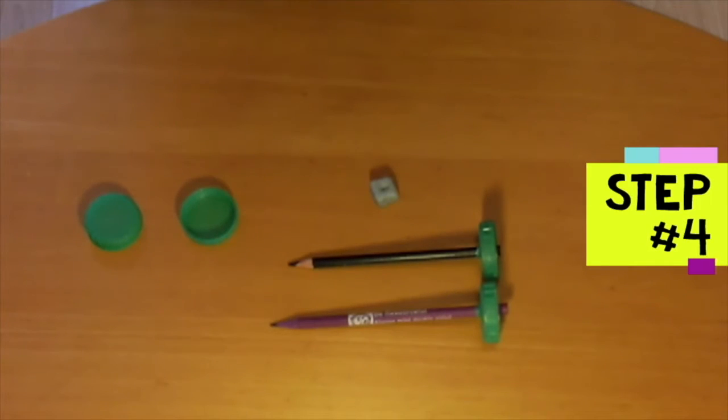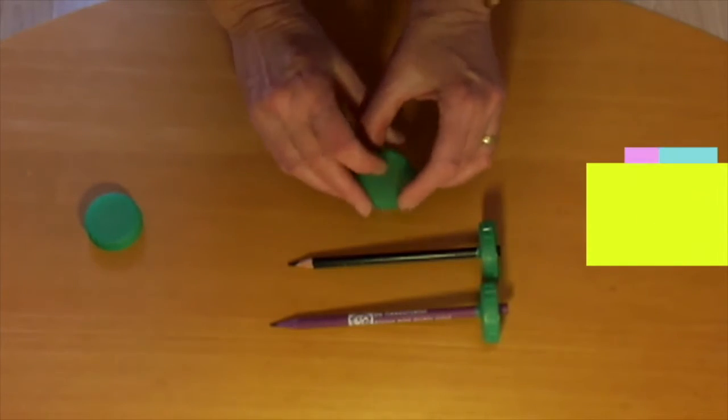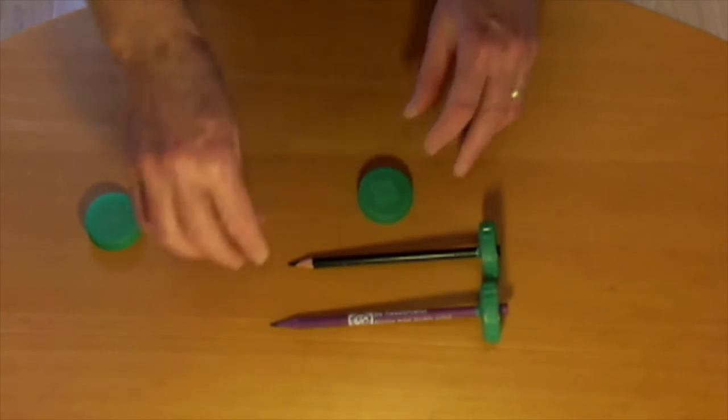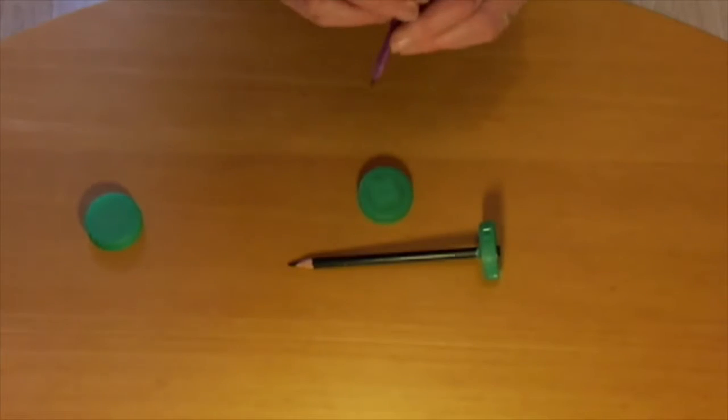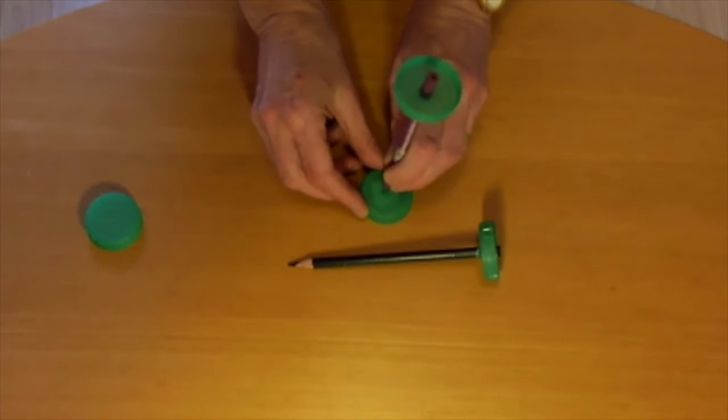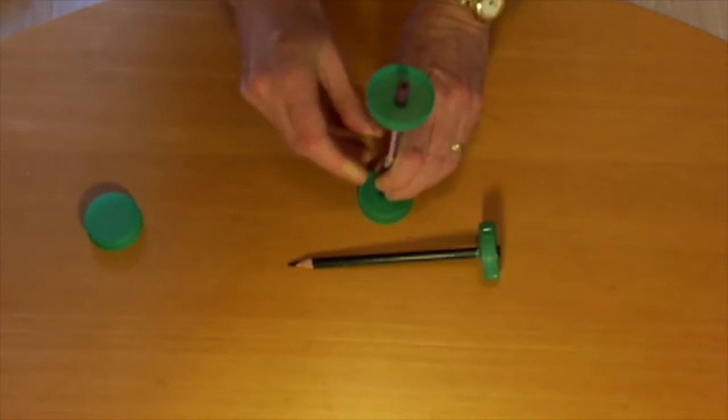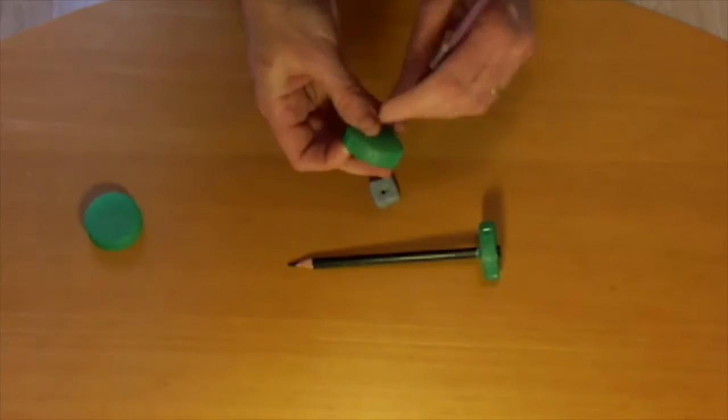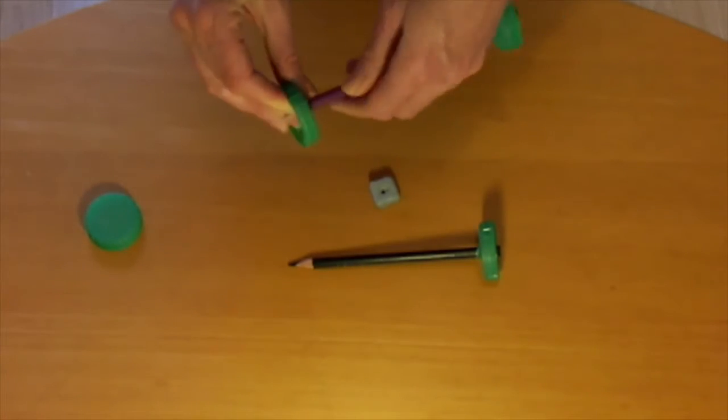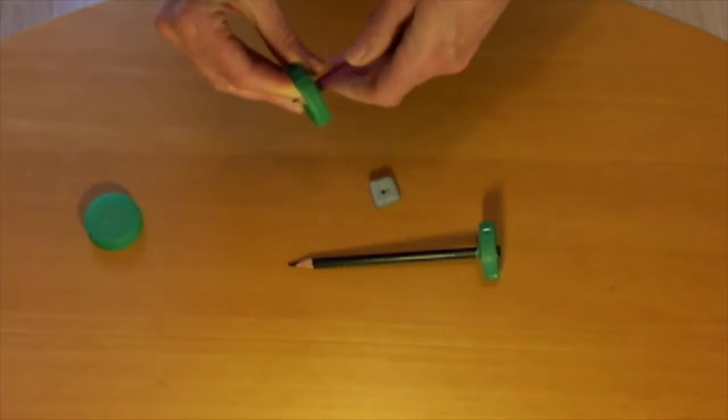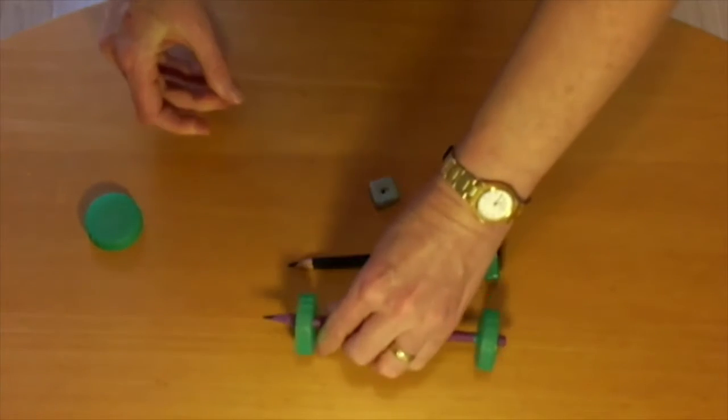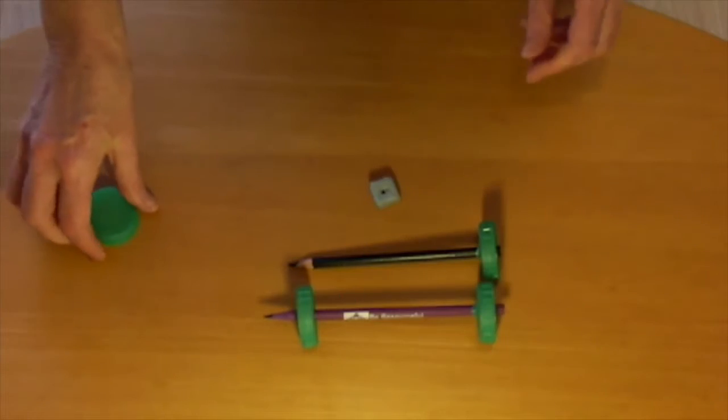Step 4 is to make the other two wheels. So you're going to place a bottle lid open end down on the blue tack this time. Make a hole in the middle by pushing straight down. Take it off the blue tack and push it and twist it onto this end of the pencil. Repeat for the final bottle lid.